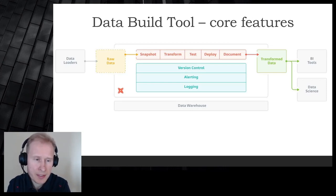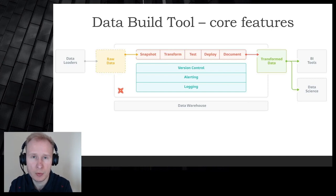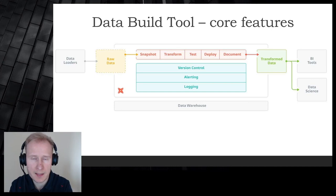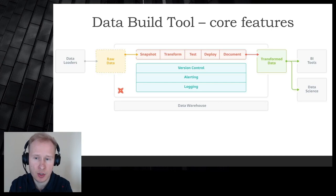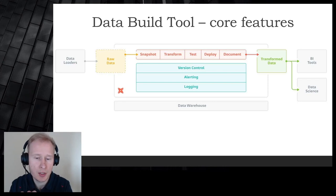In dbt, starting from raw data, you have snapshots — which help with building history and slowly changing dimensions. Transformation uses SQL. Testing gives you control over schema and the ability to write custom tests using SQL. There's a deployment part and a documentation part where you get a simple data-catalog-style website with lineage — which I'll show you. With version control you can keep all your scripts in Azure DevOps. Alerting and logging are not in the open-source part, but I'll cover the different deployment possibilities.